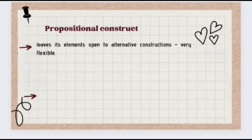The propositional construct leaves its elements open to alternative constructions and is very flexible. A construct which carries no implications regarding the other realm memberships of its elements is a propositional construct — this is an uncontaminated construction. Propositional construct should not be seen as the same as loose construction, which is about the predicted outcome changing whenever a personal construct is used. A propositional construct may be used loosely but may equally be used tightly.